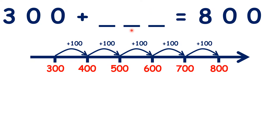But there is an easier way to get our missing number. Notice that 300 and 800 are both multiples of 100. We know that because they both end in two zeros — they both have zeros in the tens and units place values.